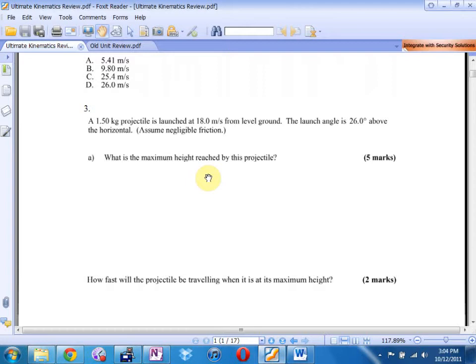Number three is a great idea of if I'm launching from the ground at an angle, what I can ask you. Maximum height, how fast it'll be traveling, how fast will it be traveling when it's at its maximum height? What will the Y component of the velocity be? Zero. Does that mean it's traveling zero? No, in fact, the reason it's only two marks is it's the horizontal component. That's your speed for a split second at the very top.